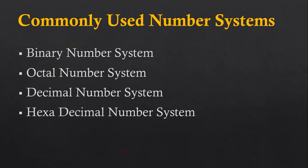Now I am going to discuss the commonly used number systems in computers. There are four types: the first is the binary number system, which is directly related to computers because computers use binary language represented with zero and one. The second is octal, the third is decimal, and the fourth is hexadecimal. These four number systems are commonly used.